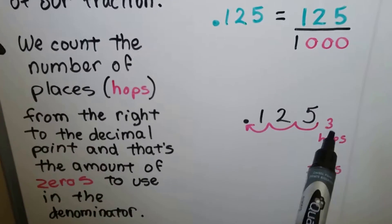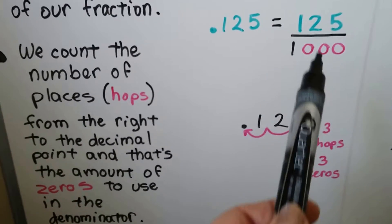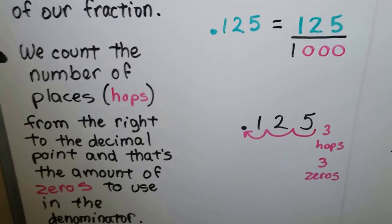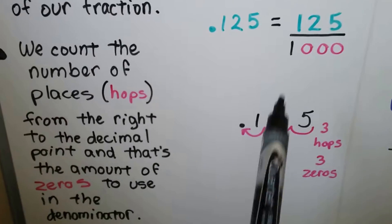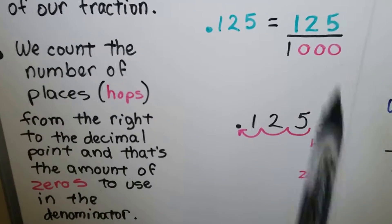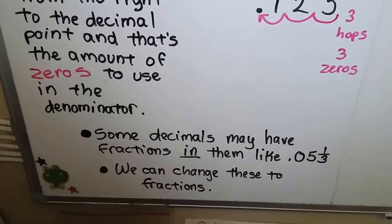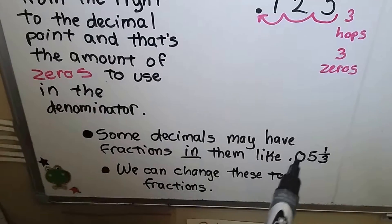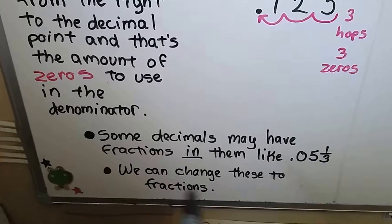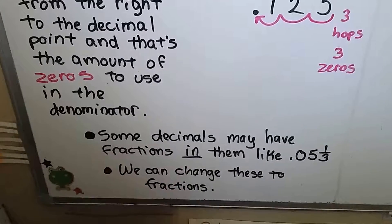For 0.125 we've got 1, 2, 3 hops, so there's going to be 3 zeros in the denominator — 1,000. That's 125 thousandths. And some decimals may have fractions in them, like you might see 0.05 and a third. We can change these to fractions also, and I'll show you.